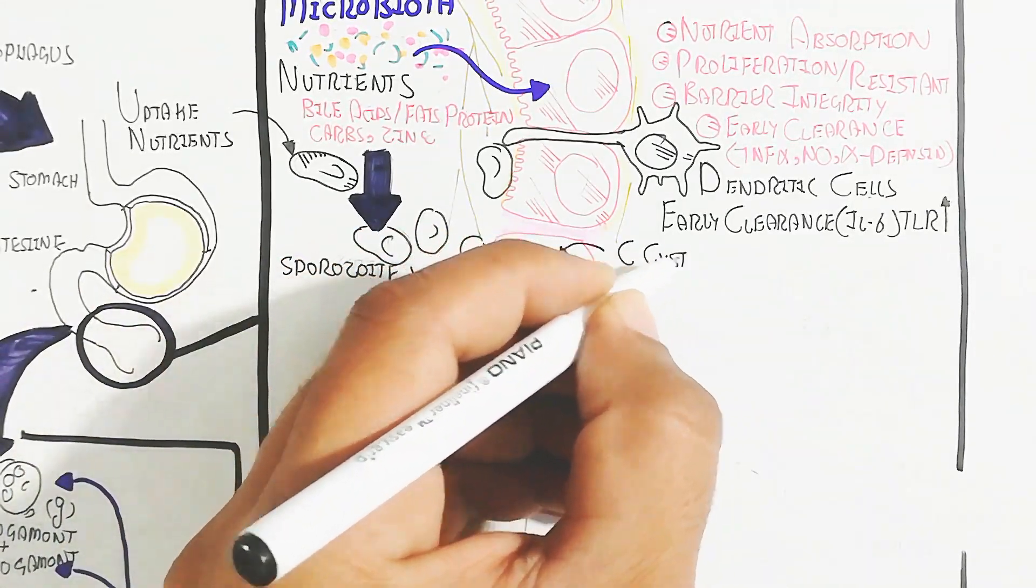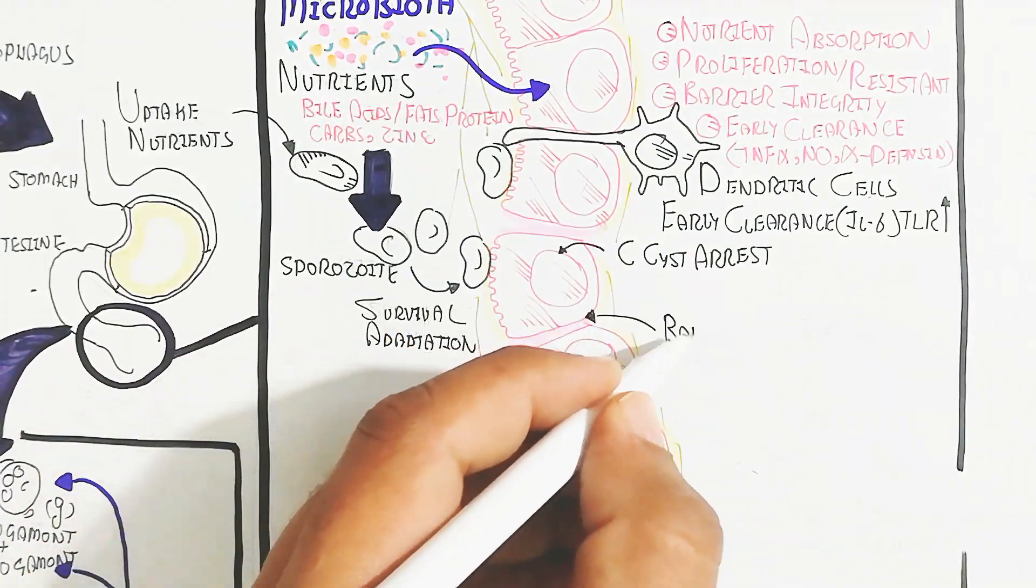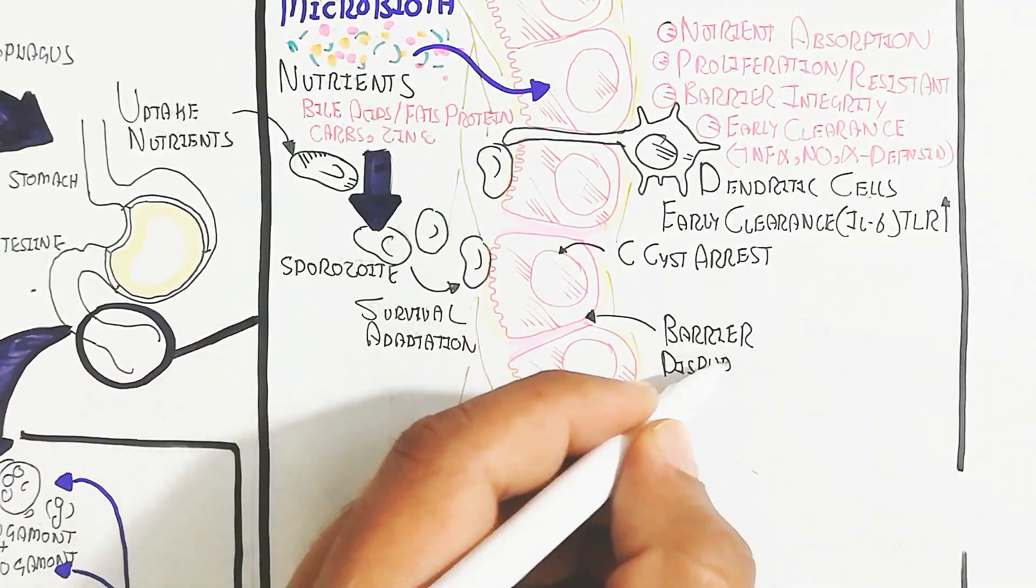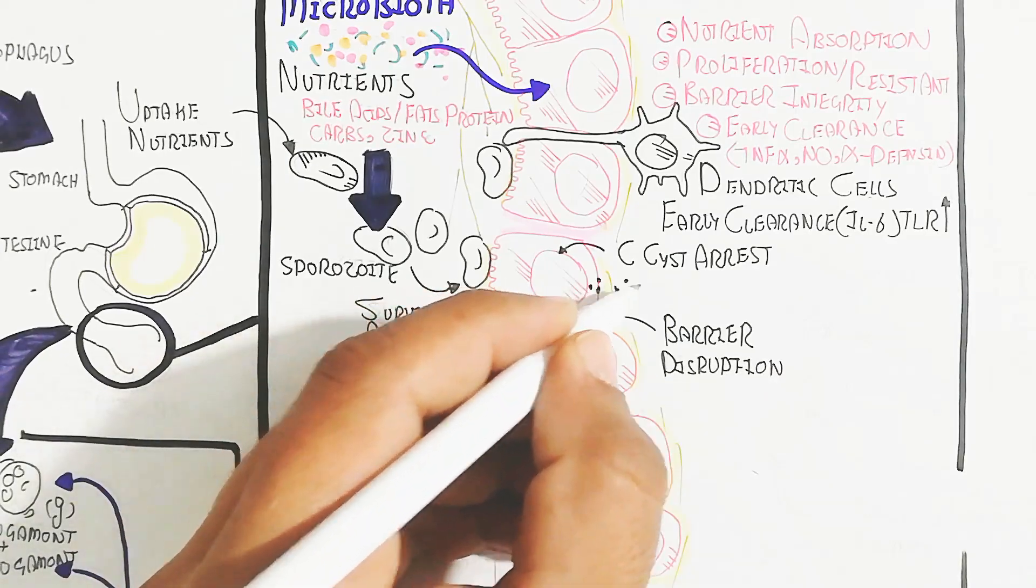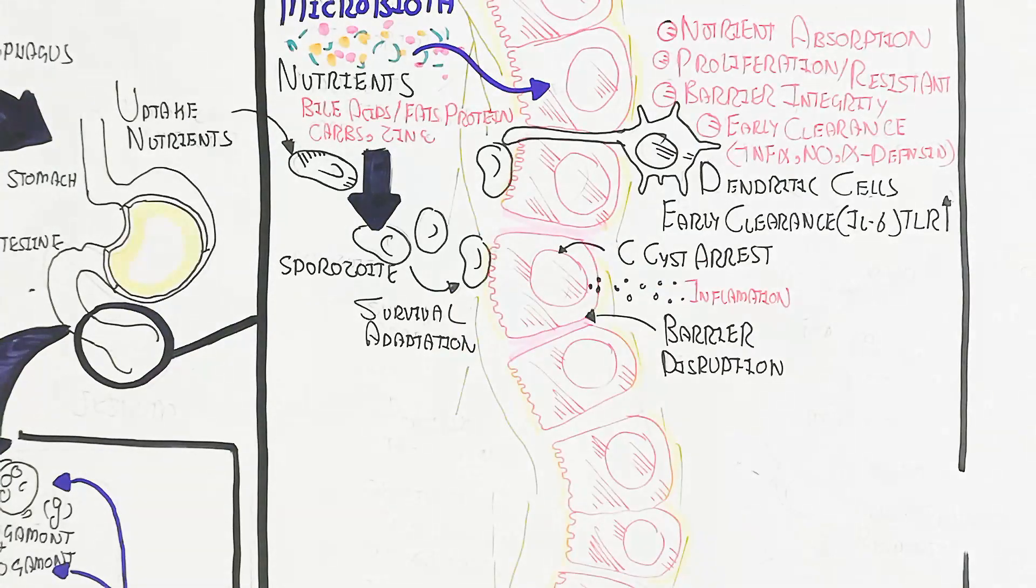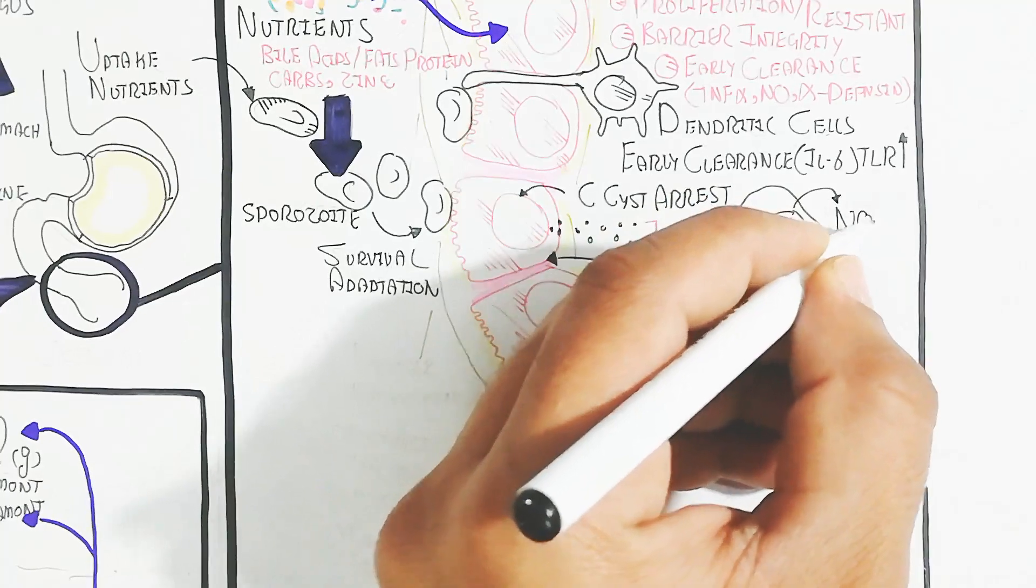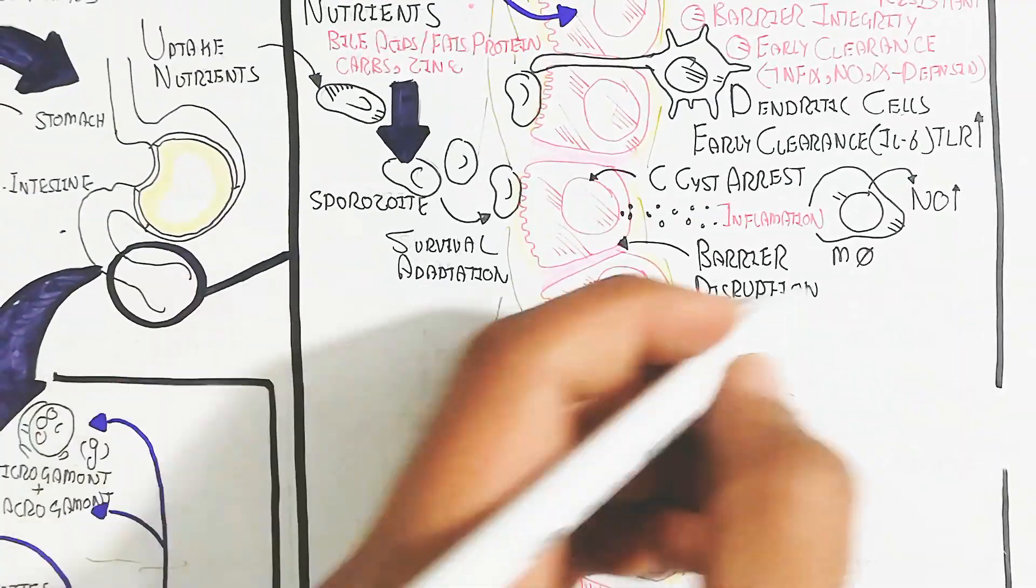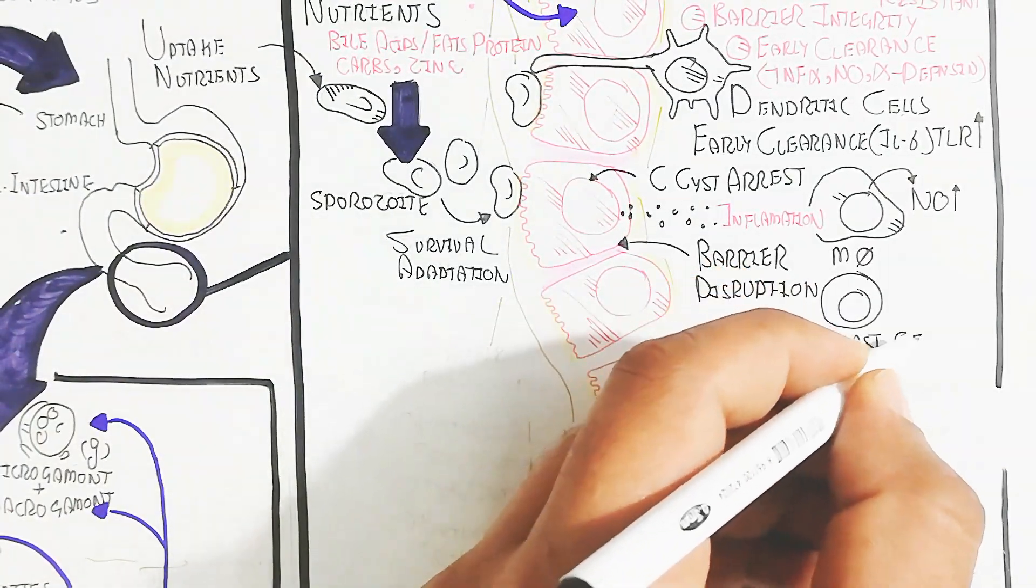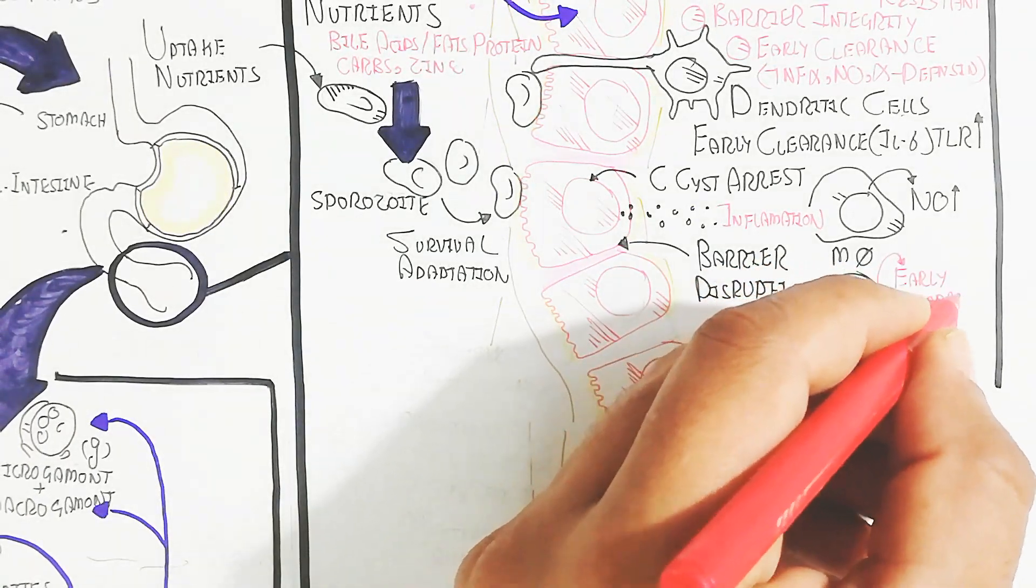The cyst arrest at the epithelial cell will lead to inflammation. This inflammation as well as barrier disruption will occur. Inflammation occurs as macrophages are recruited through cytokines. The macrophage produces nitric oxide, which increases permeability of the epithelial cell and increases inflammation.